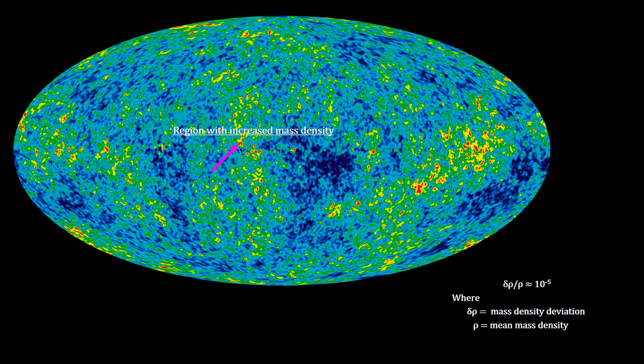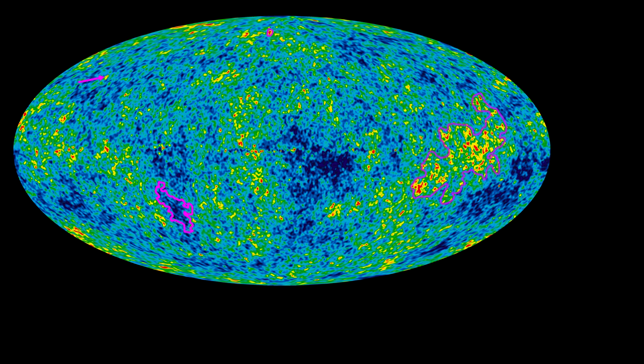These temperature deviations come from equally small mass density deviations in the plasma at the time of decoupling. We see large structures, small, even tiny structures, and giant structures — structures within structures at every scale. In other words, they're quite fractal.